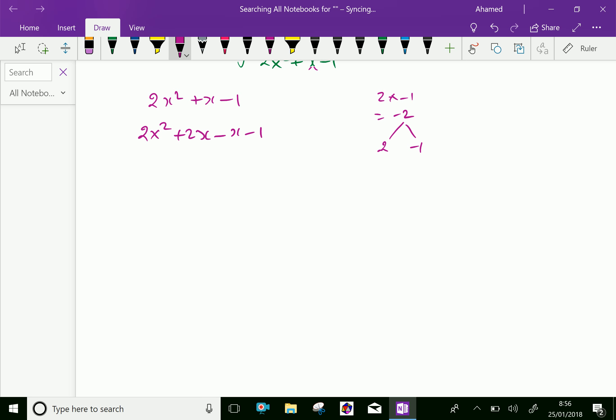So, take 2x common: x plus 1, minus 1 common: x plus 1. So, further, this is 2x minus 1 is one factor, and x plus 1 is the another factor. So, we factorized.